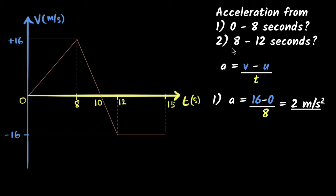Why don't you pause the video and see if you can calculate the second one yourself? Now let's calculate acceleration from eight to twelve seconds using the same formula. The final velocity V is minus 16, and the initial velocity U at eight seconds is plus 16.